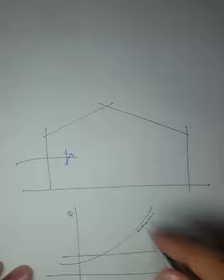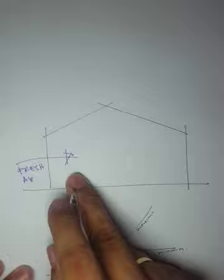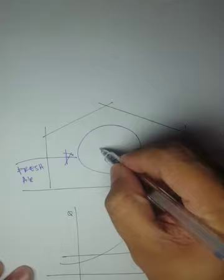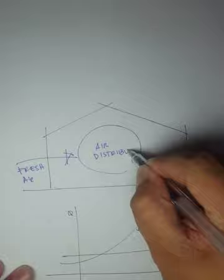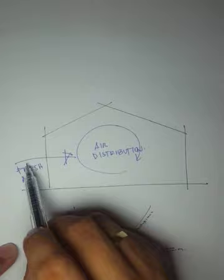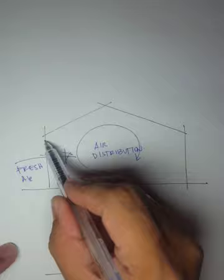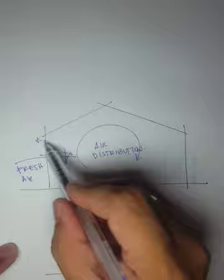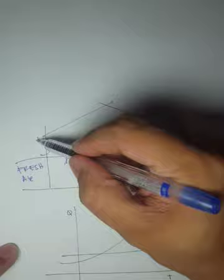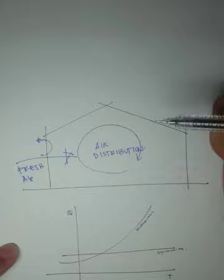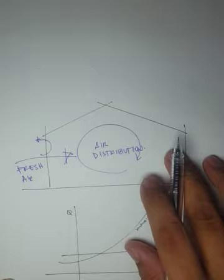The principle behind ventilation is that we need to introduce fresh air inside with proper air distribution. It's not enough to just have an opening and an outlet near each other — if the design is not proper, the air won't circulate correctly through the building.